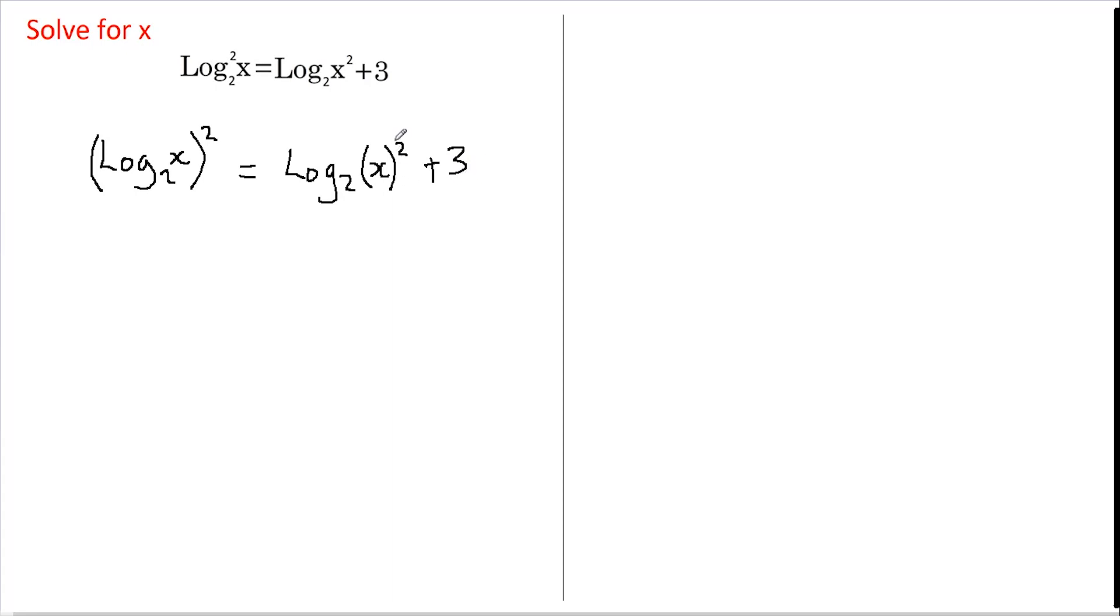Now there's a rule that allows us to take this power down to the front. So let's do that. At log base 2 of x and we're going to bring this power down to the front. But we can only do that if the power is on this variable only. So over here we can't do that. So this stays the same.